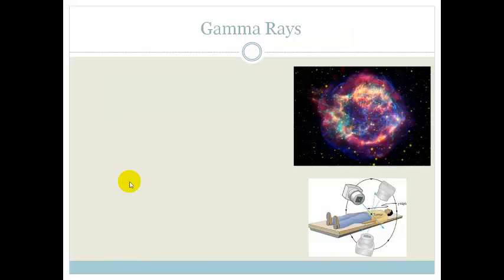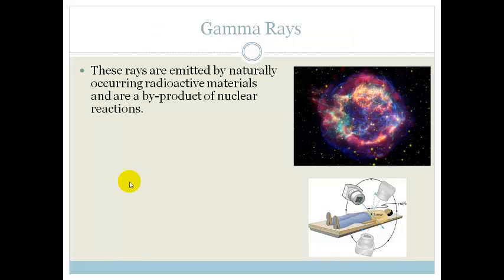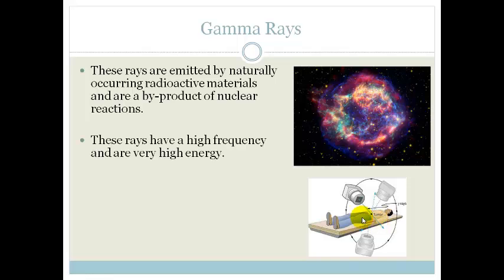Let's start with gamma rays, the most high energy of all the electromagnetic spectrum that we know about. These rays are emitted by naturally occurring radioactive materials and are a byproduct of nuclear reactions. Here you can see a basic star exploding, giving off a huge amount of radioactive materials such as gamma rays.